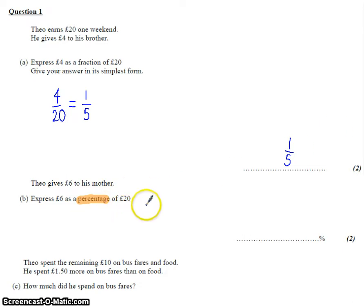So I'm going to write it as a fraction to start with, 6 over 20. Well, if I could get it as a fraction out of 100, that would be really easy to write as a percentage. So the denominator has got to get 5 times bigger, so the numerator has also got to get 5 times bigger.